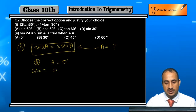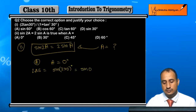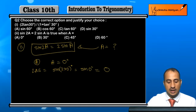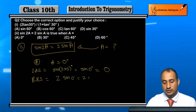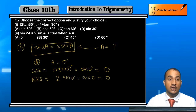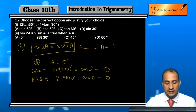If we put A = 0°, then LHS = sin(2×0°) = sin0° = 0. And RHS = 2 × sin0° = 2 × 0 = 0. Both are equal, so for option A, both sides are equal.